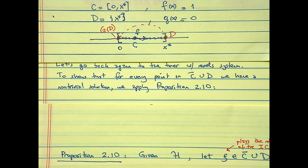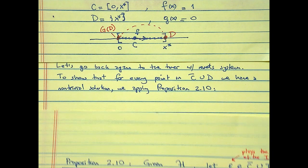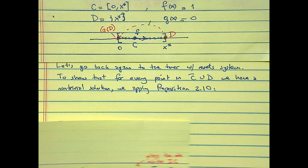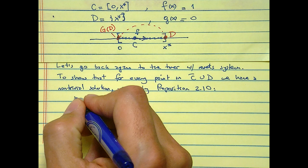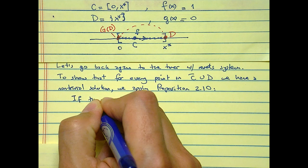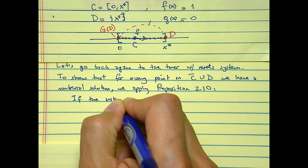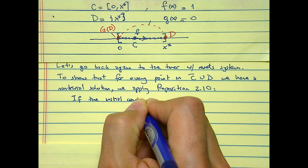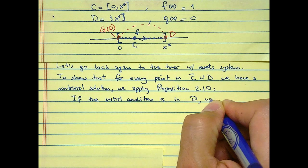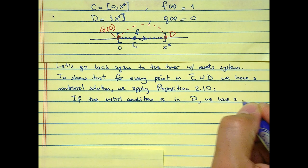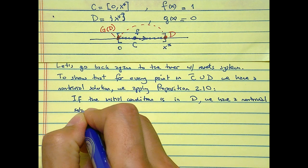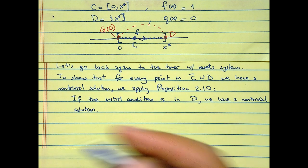How do we apply Proposition 2.10? As we see in Proposition 2.10, if the initial condition is in D, then we have a solution. We have an ulterior solution. You can even skip this because there's nothing to check, right?